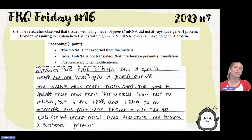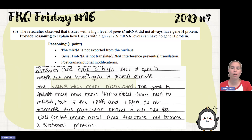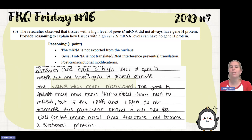Tissues could have a high level of gene H mRNA but not a gene H protein because the mRNA was never translated. Gene H may have been transcribed from DNA to mRNA, but the mRNA and tRNA do not translate this particular strand — it will not code for amino acids and therefore not become a functional protein.